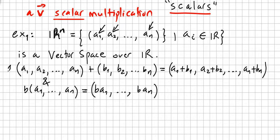The two operations for this are addition and scalar multiplication. For addition, we have a vector (A1, A2, ..., An) plus another vector (B1, B2, ..., Bn). Adding them, you add each component: (A1 + B1, A2 + B2, ..., An + Bn).